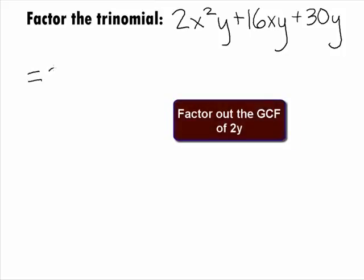The GCF of all three terms is 2y. Factoring out the 2y, we get 2y times x squared plus 8x plus 15.